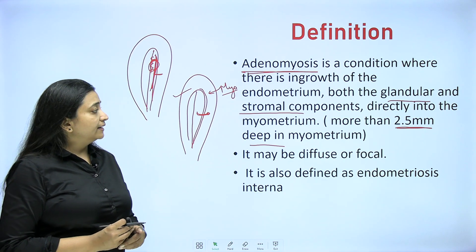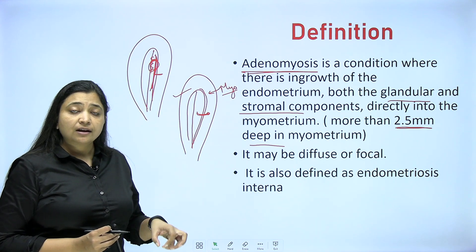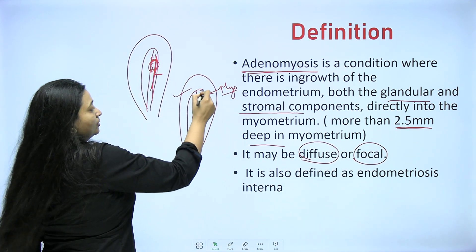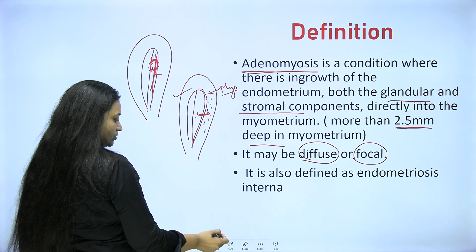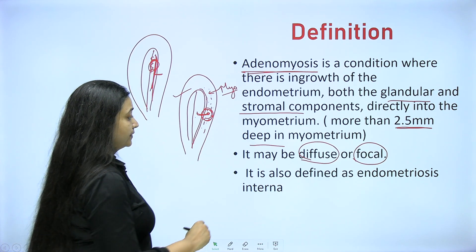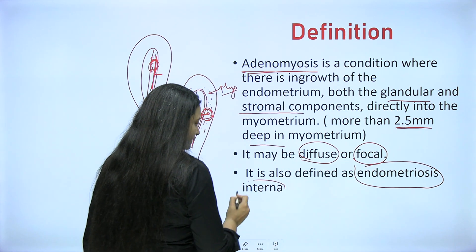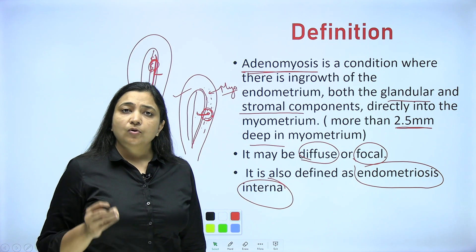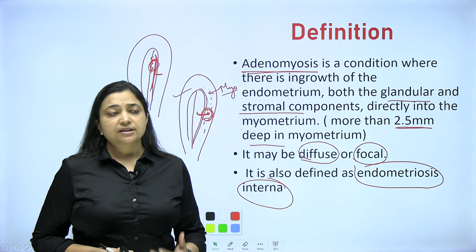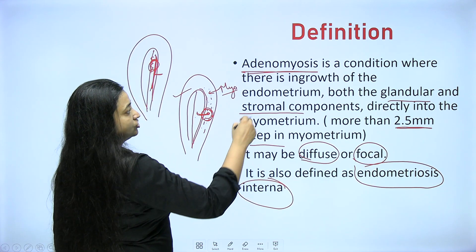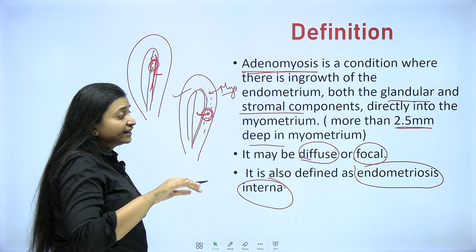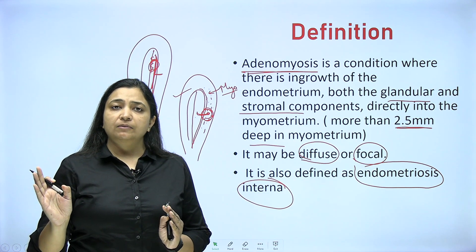Adenomyosis is just like endometriosis, but here the implants are inside the myometrium itself. It may be diffuse or focal. Either there are multiple deposits going inside, or it is focal — a small round structure formed inside which we call an adenomyoma. It is also called endometriosis interna. If endometriotic spots are found in the pelvis at other places, we call it endometriosis; but if it is going inside the uterus itself, it becomes endometriosis interna. So the definition is: a condition where there is ingrowth of the endometrium containing both glandular and stromal components directly into the myometrium, more than 2.5 mm in depth.